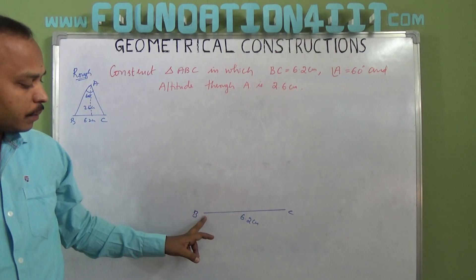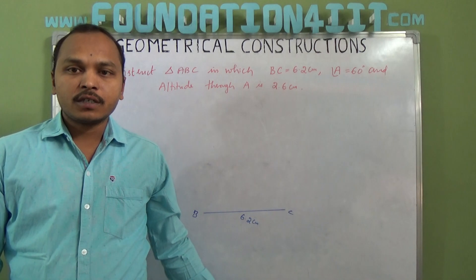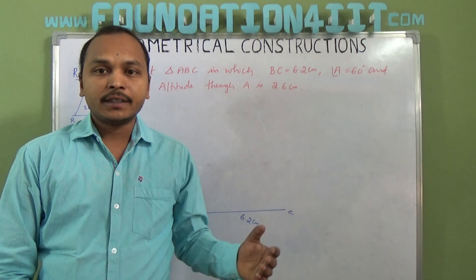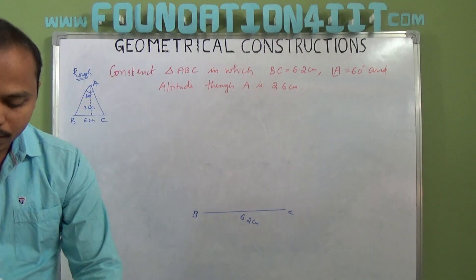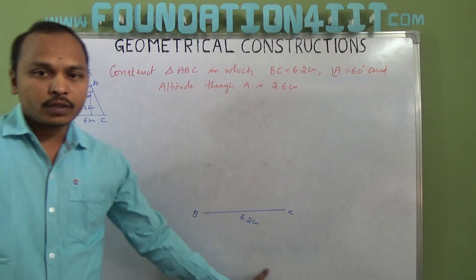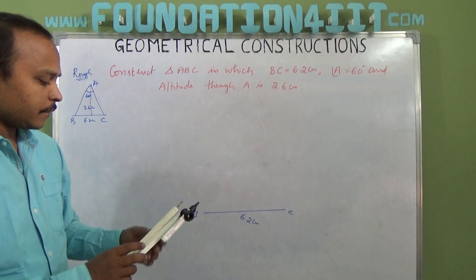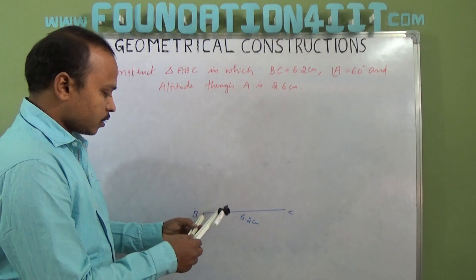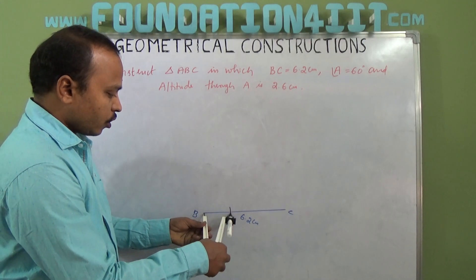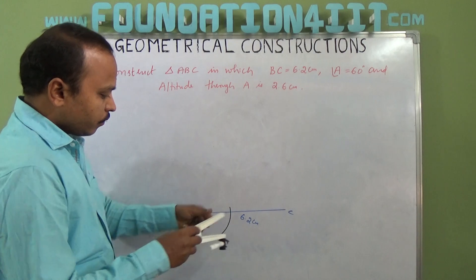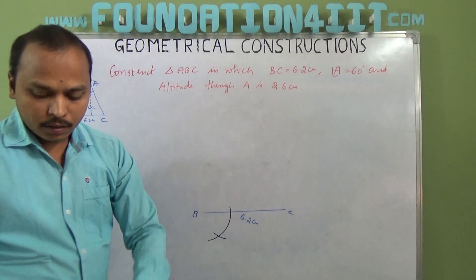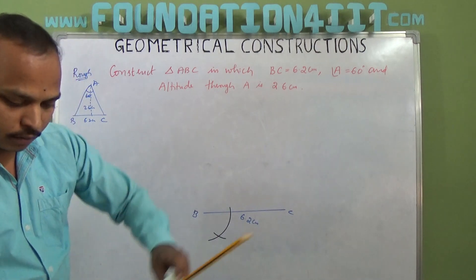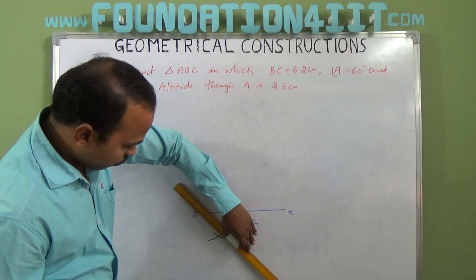Since you don't know where A is yet, first from B we can take angle 60 degrees downward using the tangent property. For that we need to construct angle 60 degrees towards down. First draw an arc, then without changing the compass, cut this arc. Draw a line towards down.